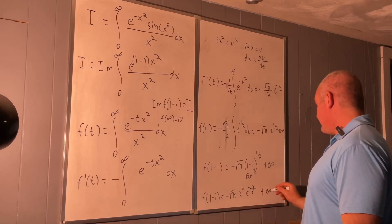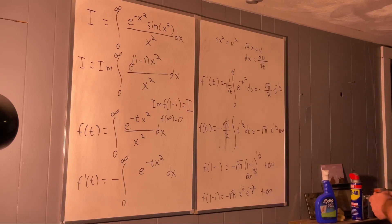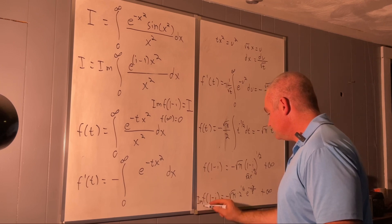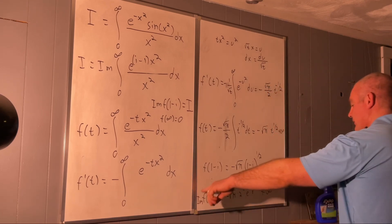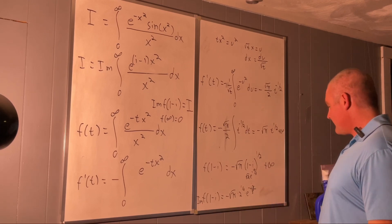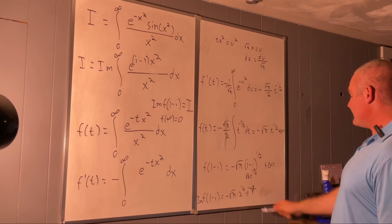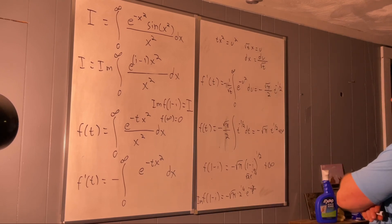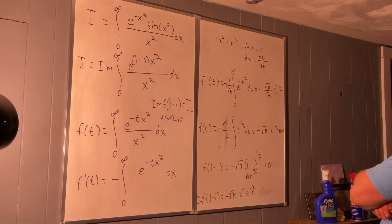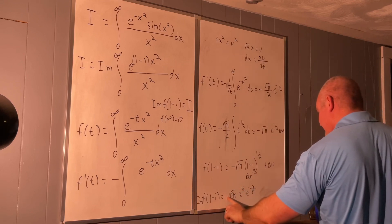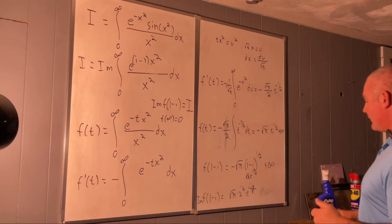Taking the imaginary part: the real infinity goes away. e to the negative i pi over eight equals cosine(pi/8) minus i sine(pi/8), so taking the imaginary part just leaves us with negative square root of pi times two to the one fourth times sine(pi/8). And that's the answer.